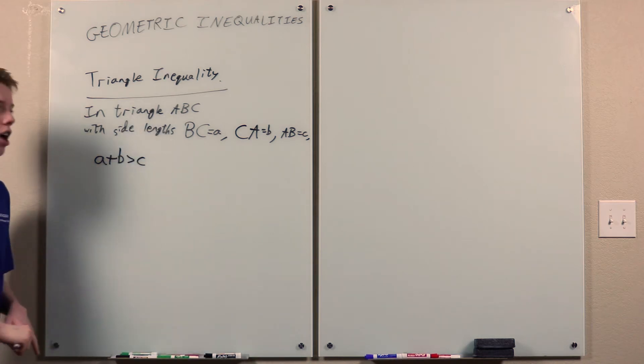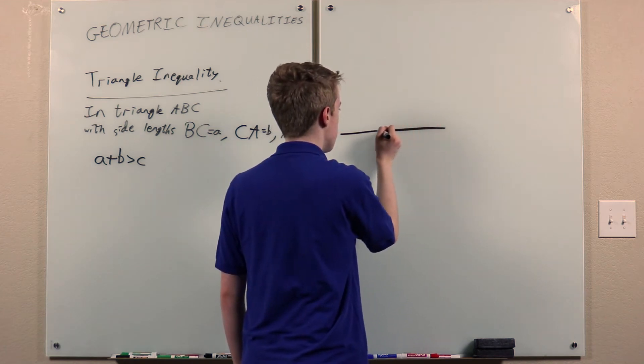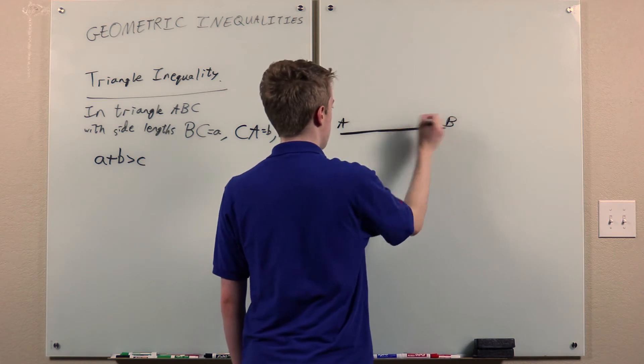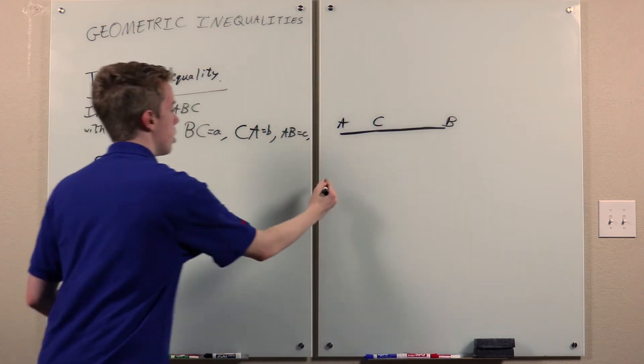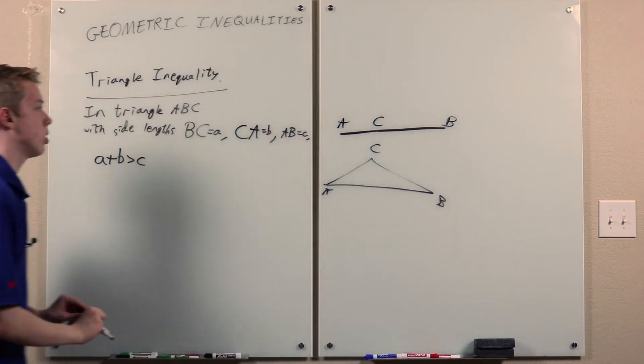And we're assuming this is an actual triangle, so if it's something like this, where all the vertices are collinear, then that doesn't work. But in a real triangle like this, that works.